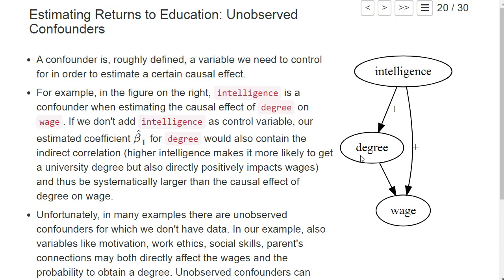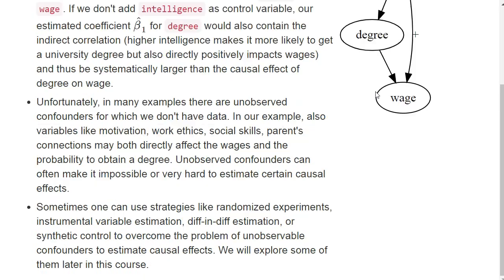Can we really measure intelligence? We may have data from an intelligence test score or school grades as a proxy, but there are many more variables that affect both the likelihood to get a degree and wages — how motivated you are, your parents' income, your parents' connections. There are a lot of factors that can lead to indirect correlation between having a degree and your wage, and often in reality it's not possible to get data for all these possible confounders. So estimating real causal effects is often very, very difficult.